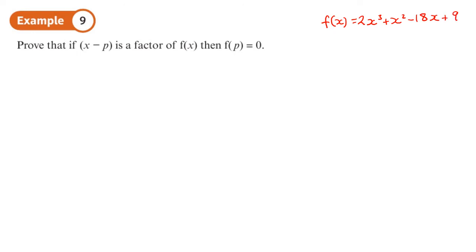x minus 3 is a factor because I've done a long division and we don't get a remainder. That means I can write 2x cubed plus x squared minus 18x plus 9 as equivalent to this factor times by some other polynomial here.